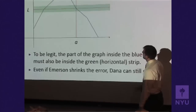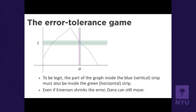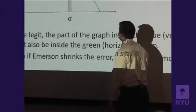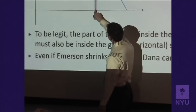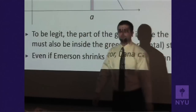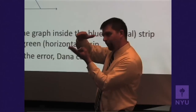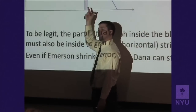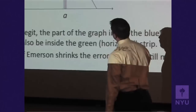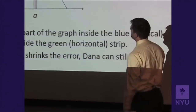The next stage of the game was that Emerson would say: okay, it's okay that you won the first round, but if I make the error a little bit smaller — half of what it was before — can you find a tolerance which suits this error? Dana figures out that half as much as before is going to work here as well. And now you can see how this game is going to play out: no matter how thin Emerson chooses that error interval to be, Dana's going to be able to make a thin enough tolerance interval to fit the X's inside the Y's. Eventually, Emerson has to give up because the limit of this function as x goes to A is L.